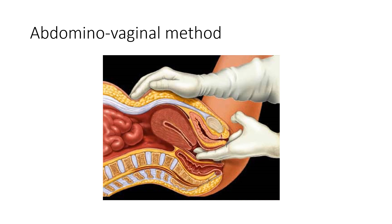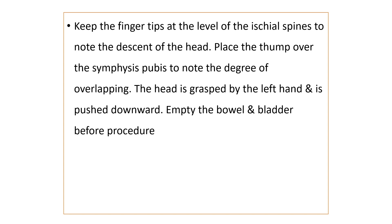Next is the abdominal-vaginal method. In this method, one hand is kept over the abdomen and the other hand is introduced through the vagina. The left hand is over the abdomen, and the middle and index fingers of the right hand are introduced into the vagina, with the thumb kept over the upper border of the symphysis pubis. The fingertips should be at the level of the ischial spines. Then grasp the head of the baby with the left hand and push the baby downward, same as the previous method.